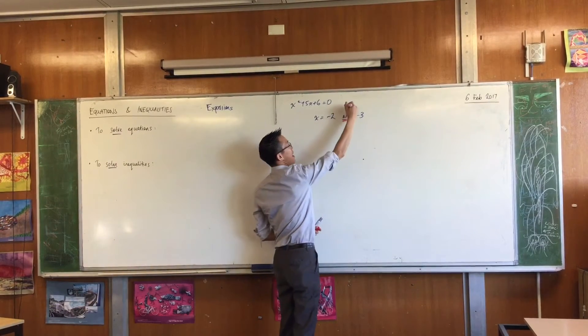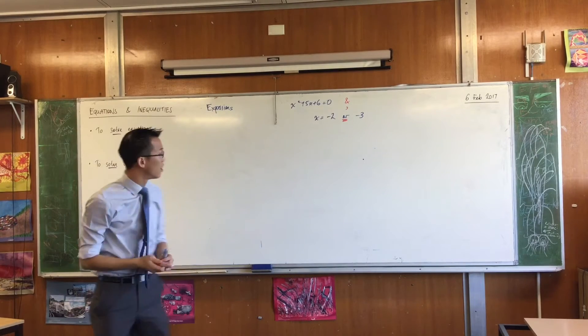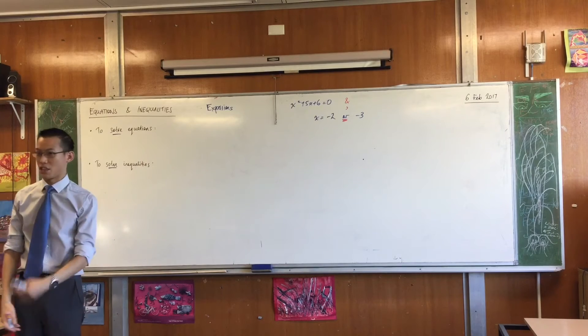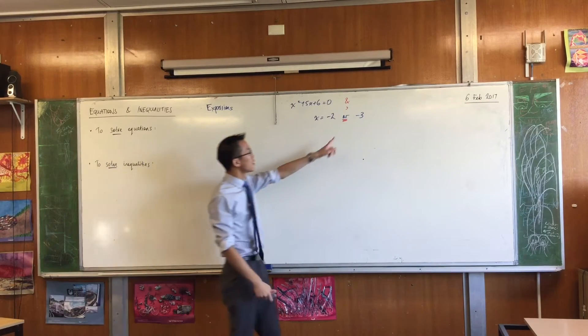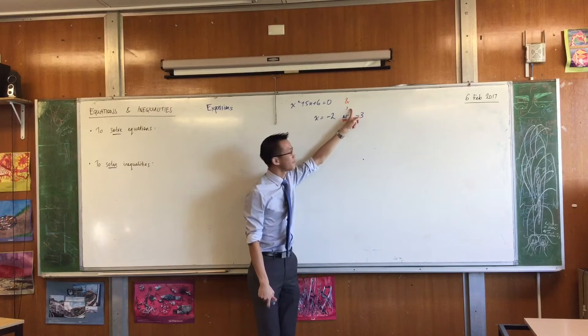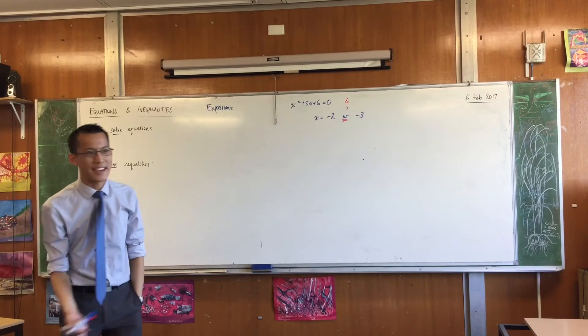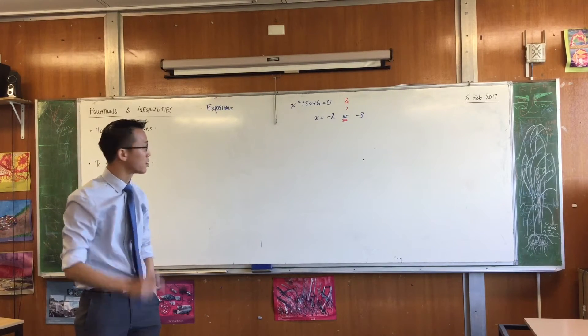There are two common things that you will see instead of the word, or. And they are a comma, or an and. Now, I'm going to suggest, in this context, that you write it exactly as I've written it, and write it as or. Don't use a comma, and the reason why is because if you write a comma, I don't know what you really mean. I don't know if you mean or, or and, or something else.